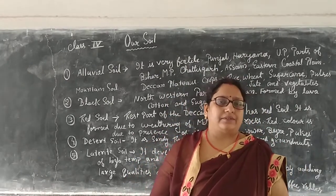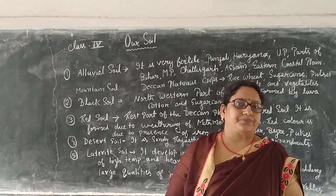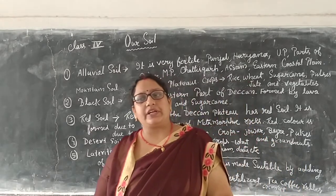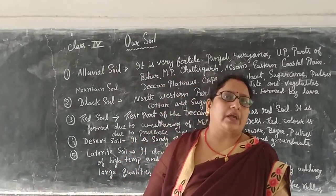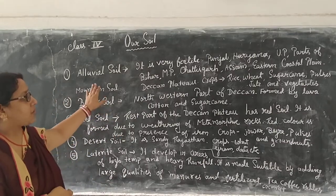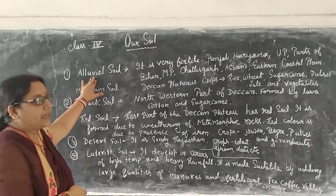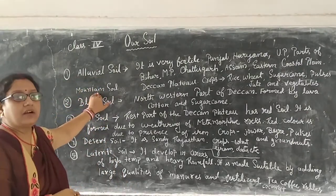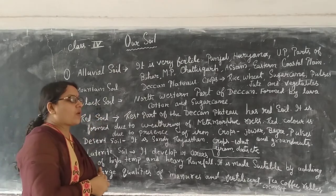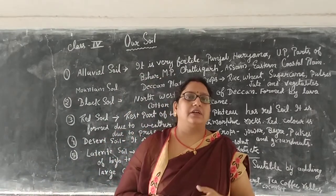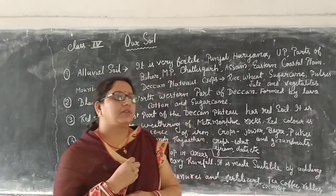If the soil is not present, plants cannot survive. In this chapter, we are going to read about some types of soil. There are six types of soil. We will go through them one by one: alluvial soil, mountain soil, black soil, red soil, desert soil, and laterite soil.